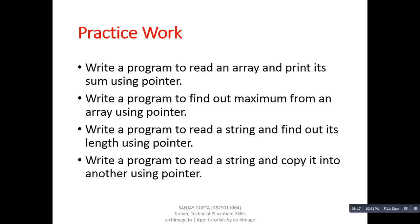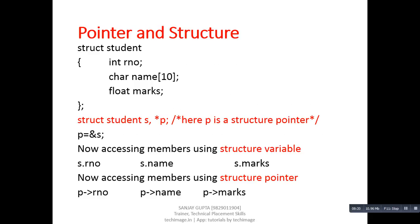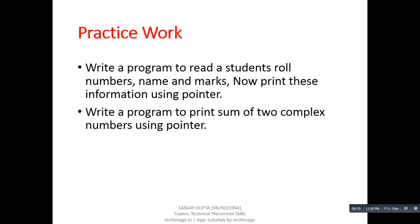Next is pointer and structure. A structure is a collection of different types of elements. We can declare a variable of a structure — so S is a variable of structure type, and P is a pointer to a structure variable. We can assign the address of S into P. If we want to access members of a structure using a variable, we use the dot operator. If we want to access members of a structure using a pointer, we use the arrow operator.